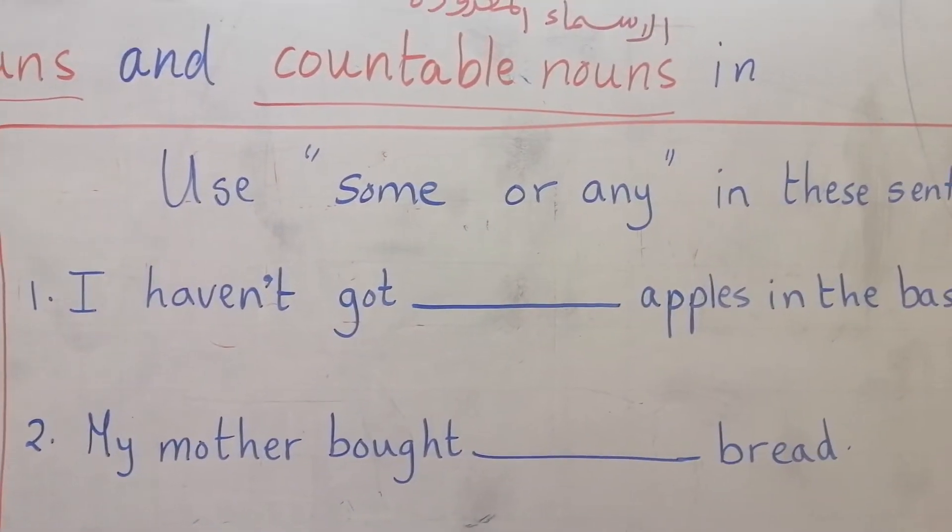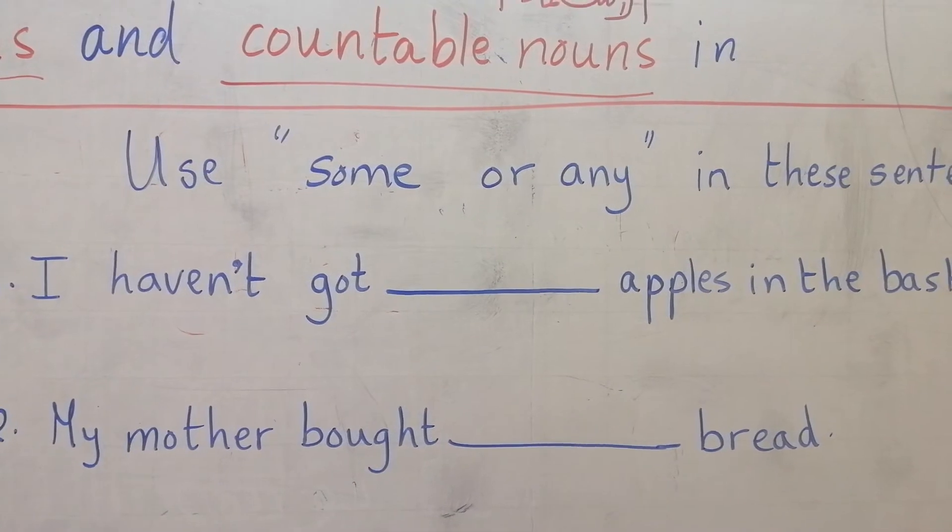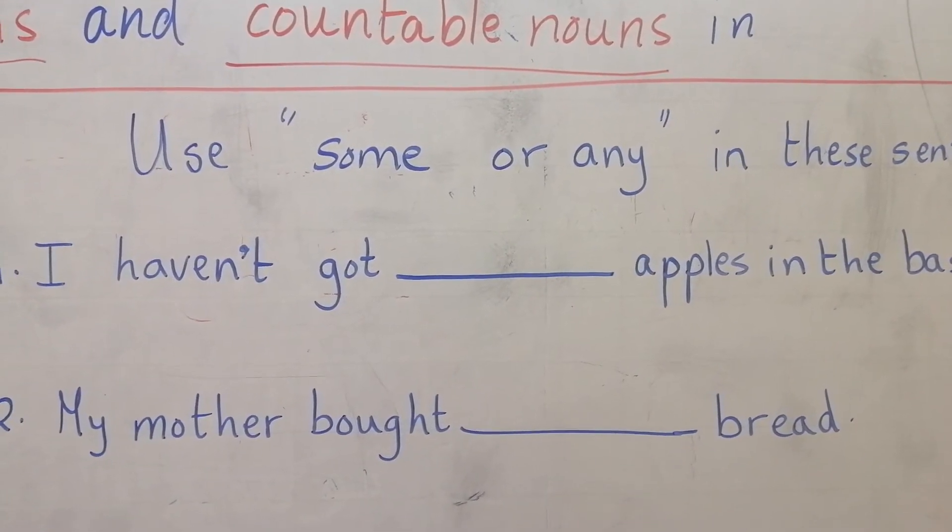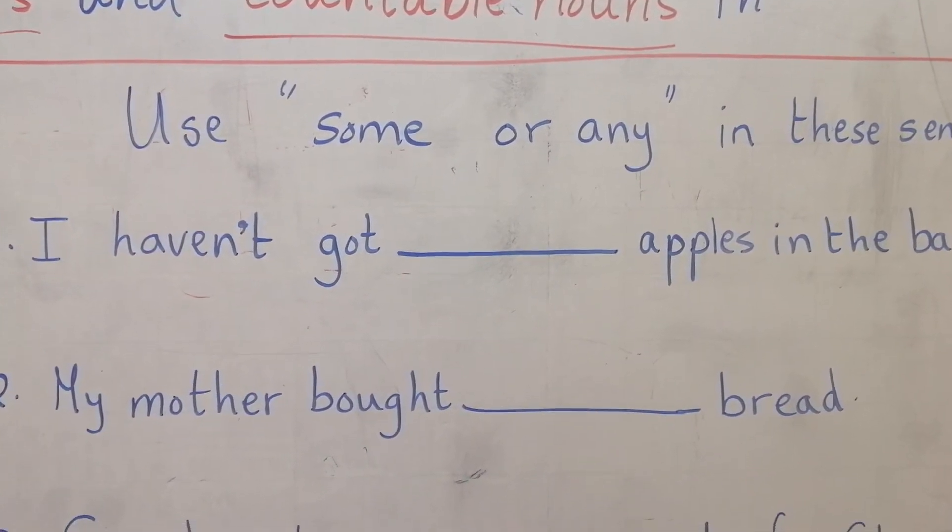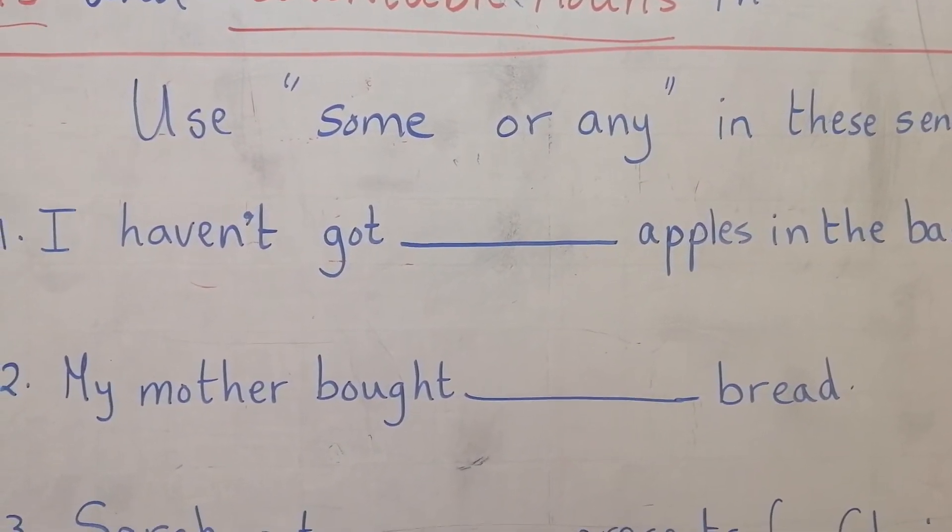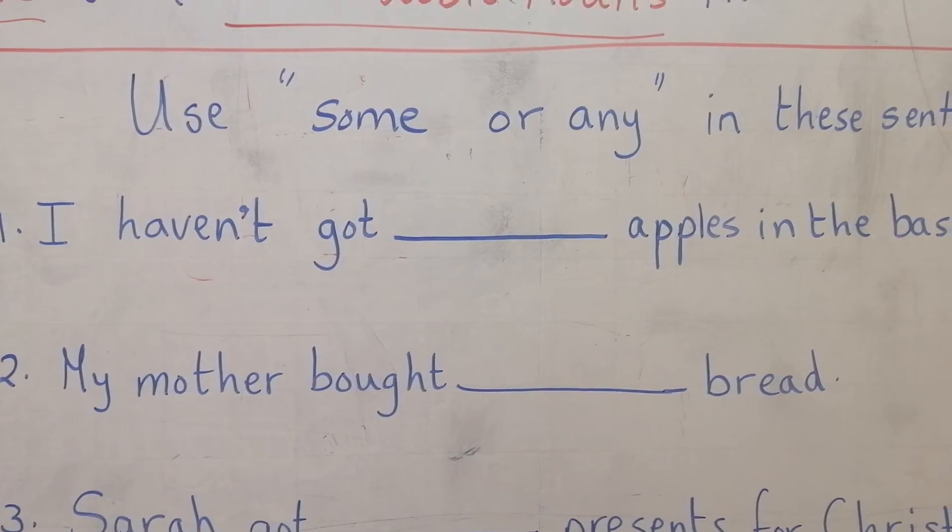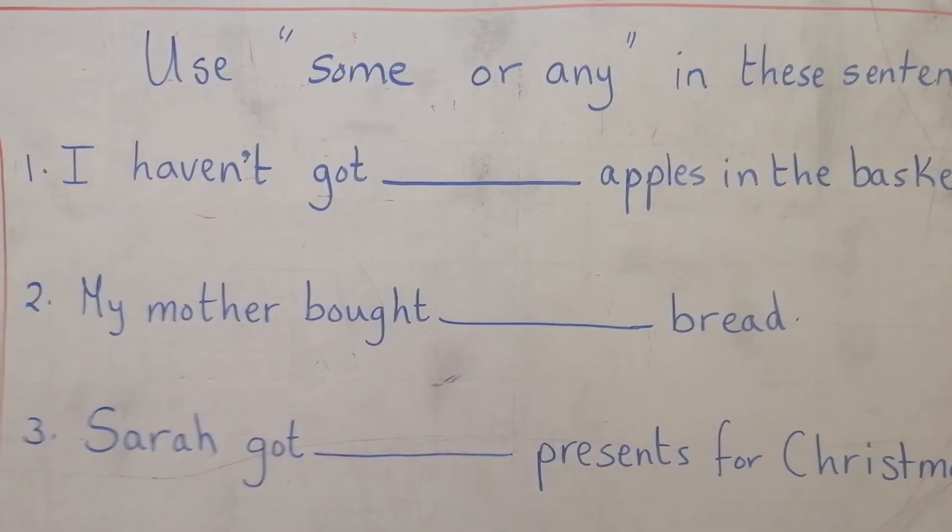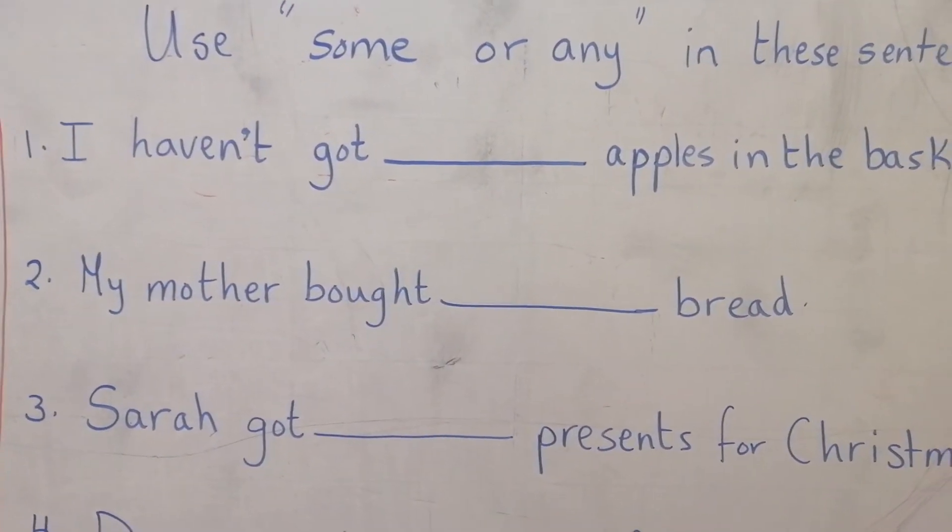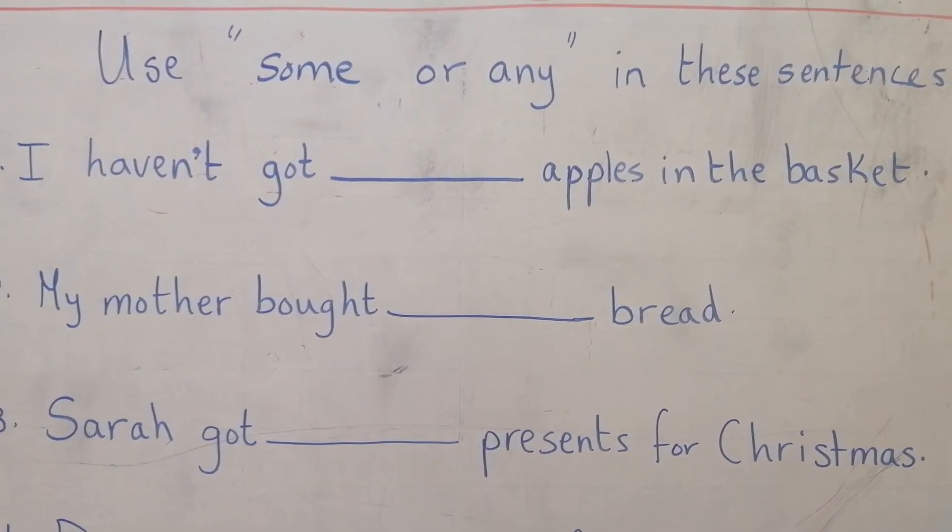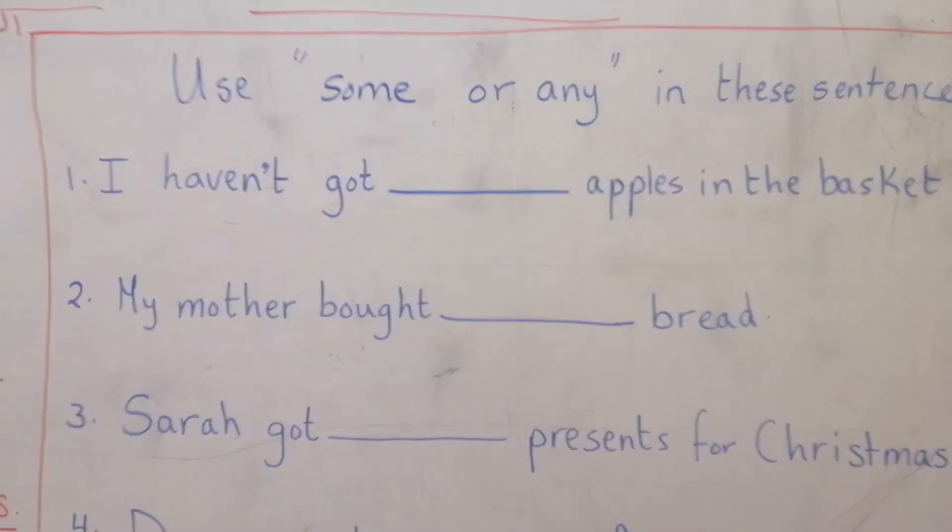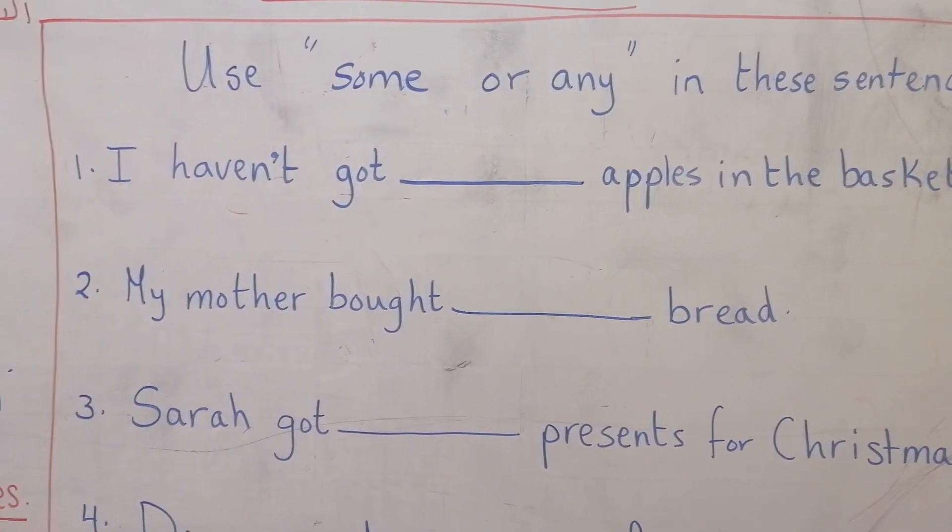My mother bought bread. The sentence here is affirmative, so we have to use some. My mother bought some bread. Sarah got presents for Christmas. The sentence here is affirmative, so we have to use some here.